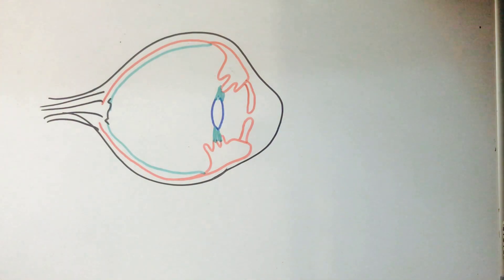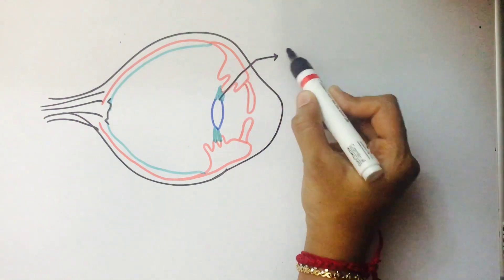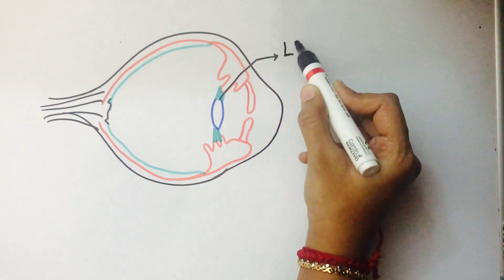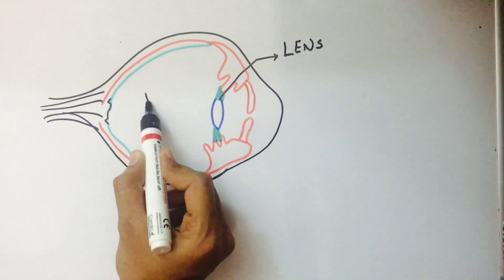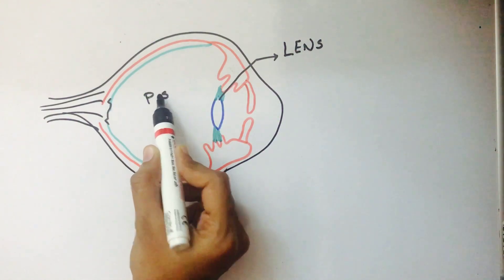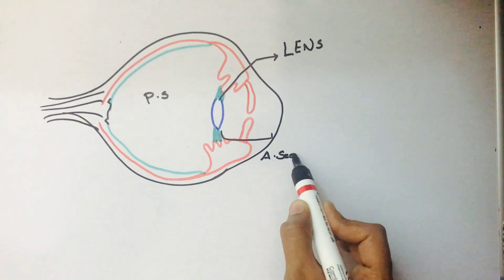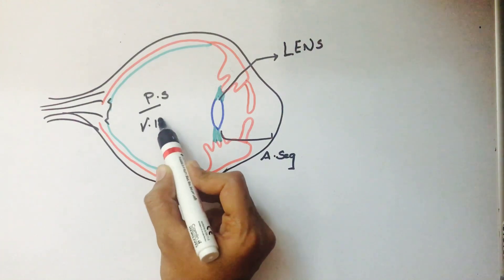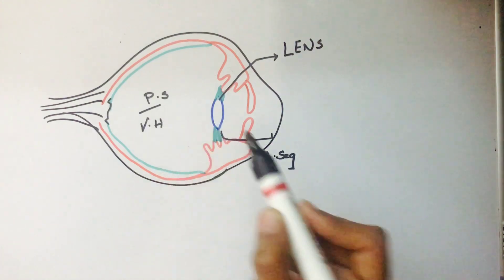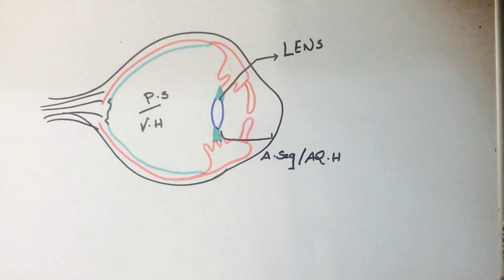The lens is suspended by suspensory ligaments. This lens divides the eyeball into two segments: the region behind the lens is called the posterior segment, and in front of the lens is called the anterior segment. The posterior segment is filled with vitreous humor.